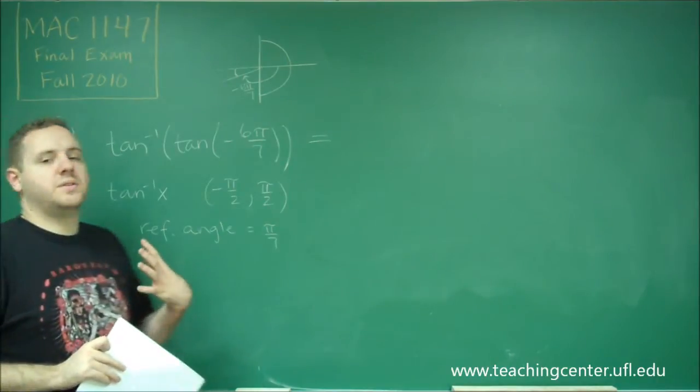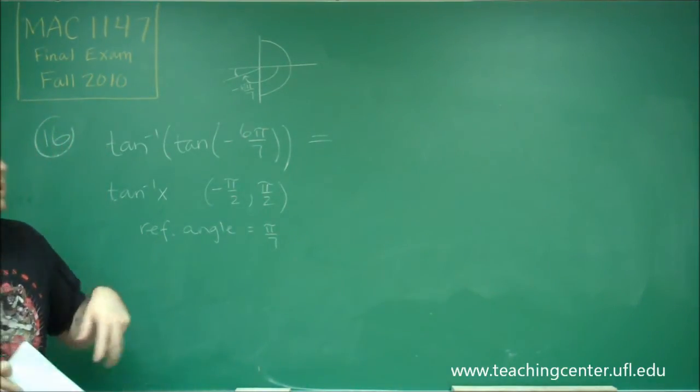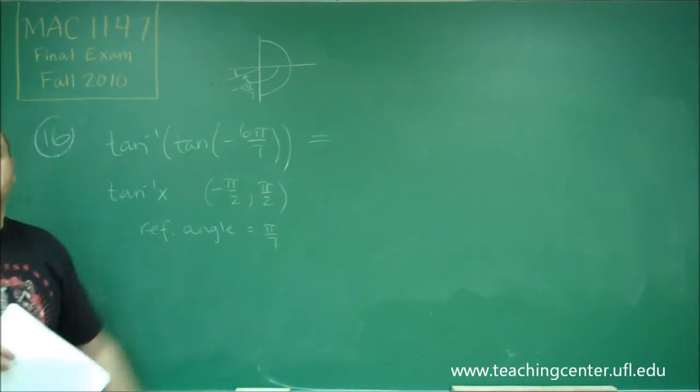So the other thing that we need to consider is, would tangent have been positive or negative there? This is in a third quadrant, so this tangent would have been positive.